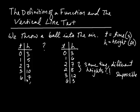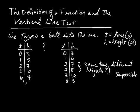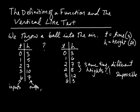The first table is the one we would believe if somebody gave us data. Now we're going to use these tables to motivate the definition of a function. We'll label the time column as the inputs and the height column as the outputs. Likewise for the second table — those will also be labeled as inputs and outputs.